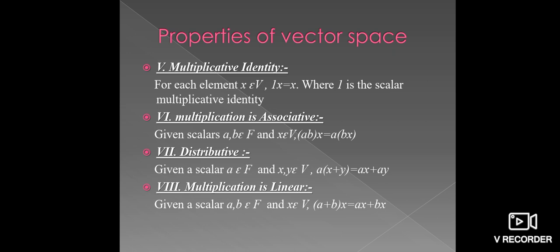Next, multiplication is associative. Given a scalar, namely A and B, which belongs to the field F, and take one vector, namely X, which belongs to the vector space V, then AB into X, which is equal to A into BX.